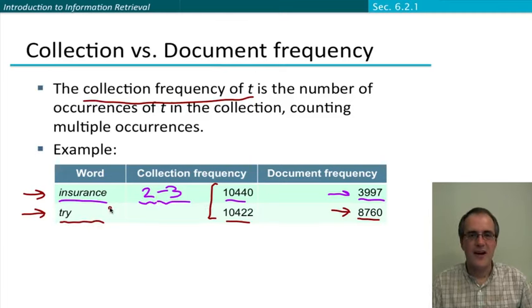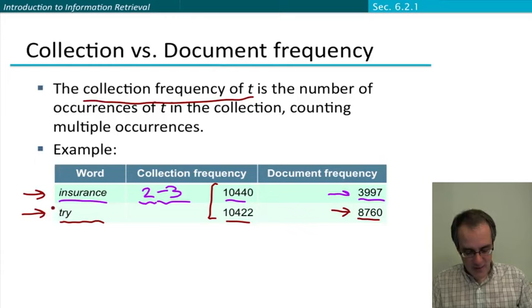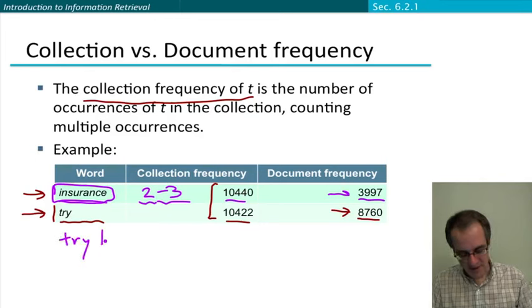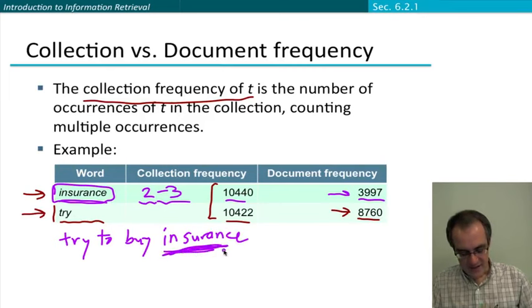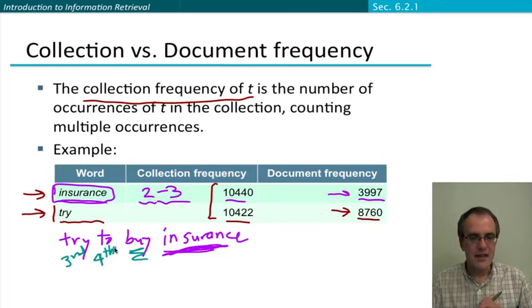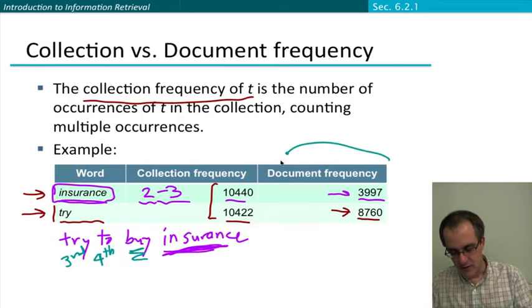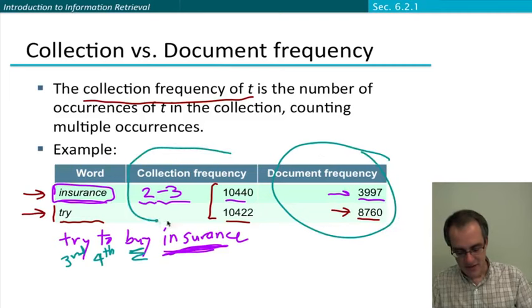And so what does that mean in terms of coming up with a score for retrieval systems with words matching? What it seems to suggest is that what we should be doing is giving higher weighting to instances of the word insurance appearing. So if we had some kind of query like try to buy insurance, the most important word to make sure we're finding in our documents to match the query is insurance. And probably the second most important word is buy. And try should be coming in third place before the near stop word of to. And so that's an idea that's being correctly captured by looking at the document frequency. But as you can see, it's not captured by the collection frequency, which would score try and insurance equally.